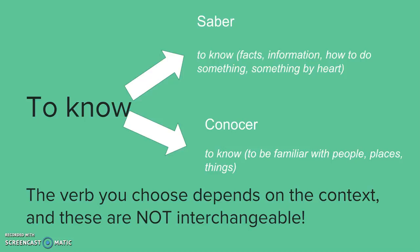We have 'saber,' which is basically used for knowledge — facts, information, how to do something, or when you know something by heart. 'To know' also means 'conocer,' and this is kind of like to be familiar with people, places, or things. It depends on the context which verb you will have to use.